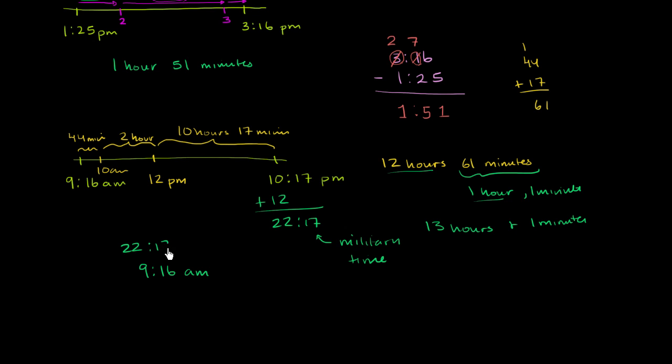22:17, and we subtract 9:16. 7 minus 6 is 1, 1 minus 1 is 0. Then we go into the hours. If this 2 becomes a 1, we can add 10 to this 2 right over here, so this becomes a 12. 12 minus 9 is 3, and you bring down that 1. We have 13 hours and 1 minute. So the same result. This is a little bit faster, actually a lot faster, and you're less likely to make mistakes.